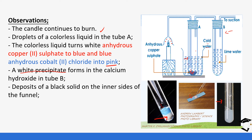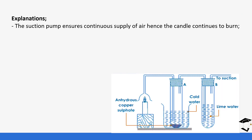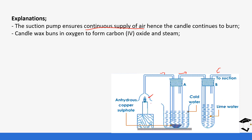The suction pump ensures a continuous supply of air. It pushes air through the apparatus and ensures continuous movement of air, otherwise the air would accumulate in the filter funnel and would not move throughout the apparatus. That is the reason why the candle continues to burn.